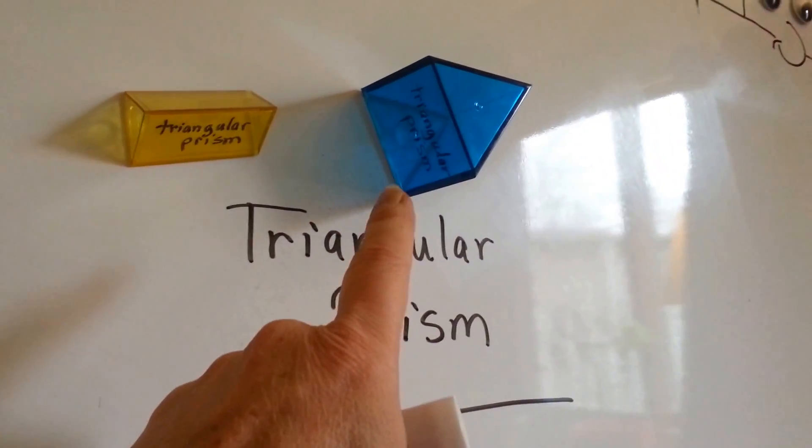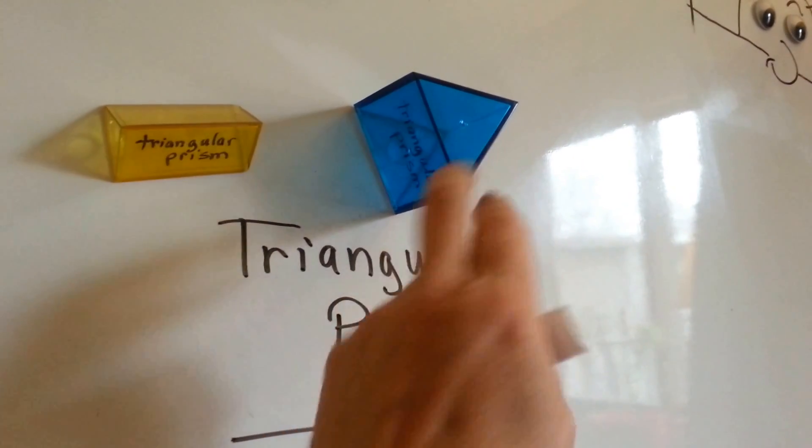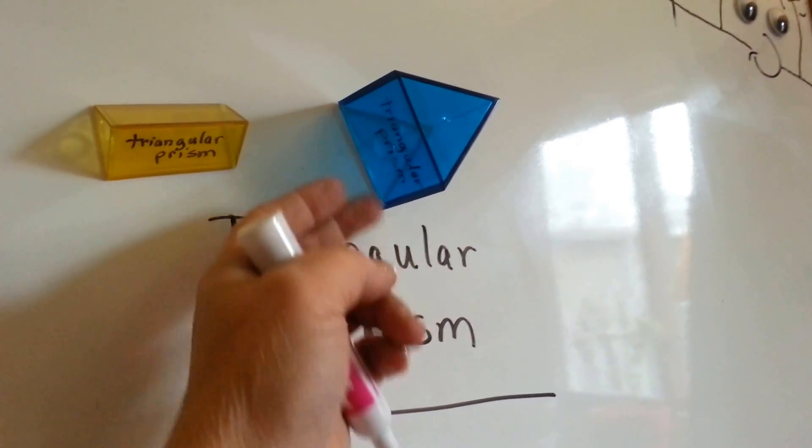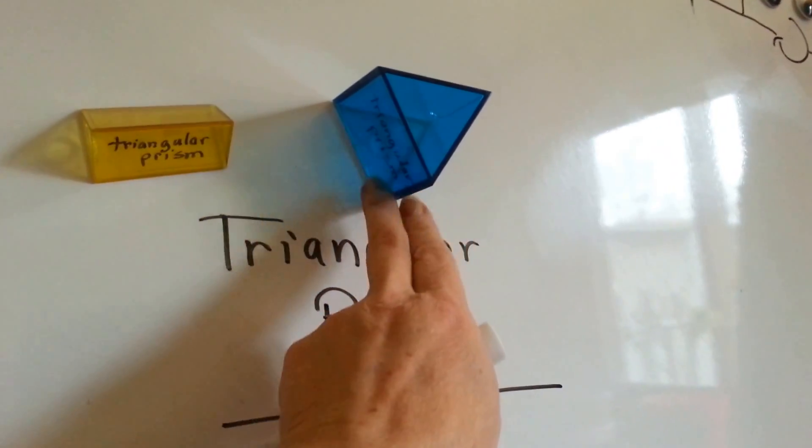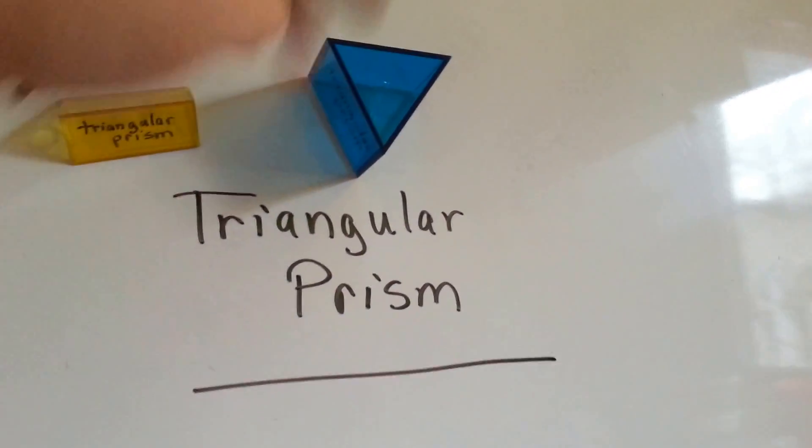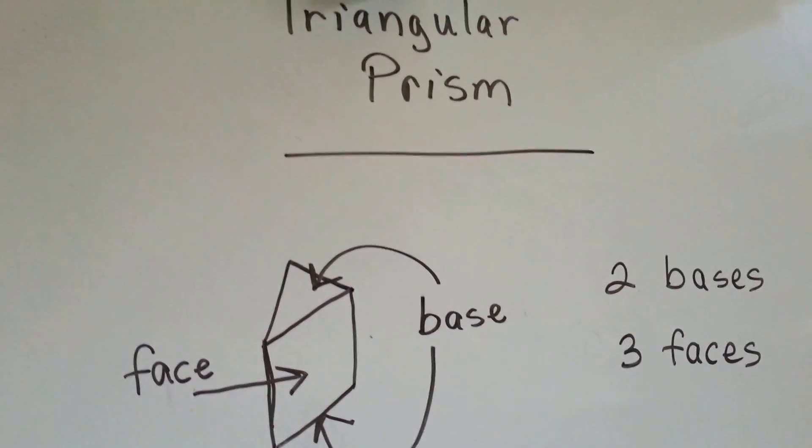Then, if you look at this one, here's a base, and the part that's stuck to the board is a base, and then these are the faces. See? So, there's three faces and two bases.